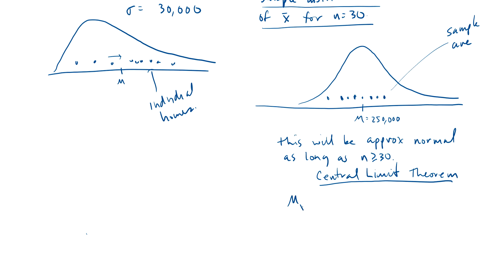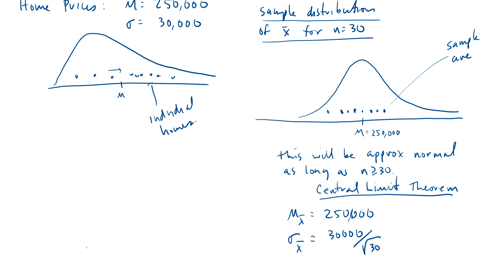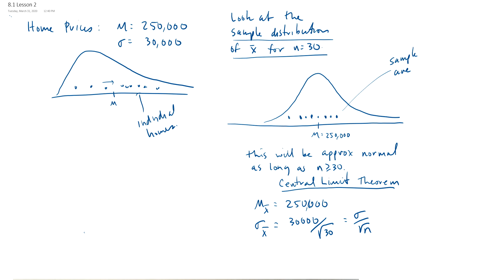So, mu sub x bar is going to be 250,000. And the standard deviation of x bar is going to be 30,000 divided by the square root of 30. This is my formula, sigma over the square root of n. This is a great result that we can use. And the question is, what are we going to do with it? Well, we're going to do things like this.